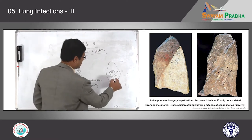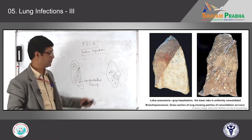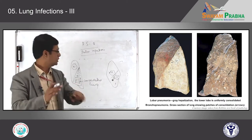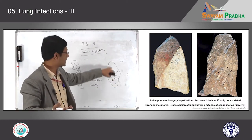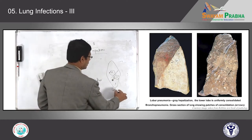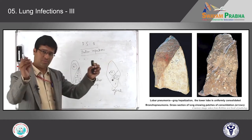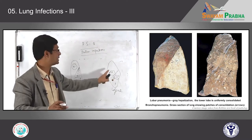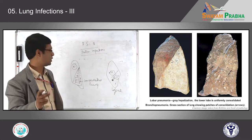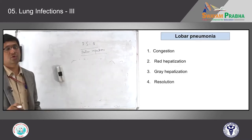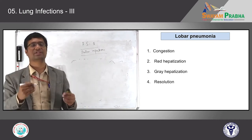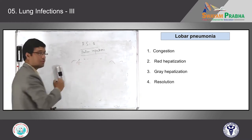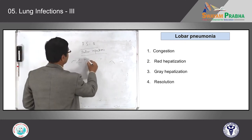One more important thing you should remember: there are four clearly mentioned stages of lobar pneumonia, depending on the duration of infection or inflammation. The first stage we call the stage of congestion. The second stage is the stage of red hepatization. The third stage is grey hepatization. And finally the fourth stage, when everything is done, is the stage of resolution.